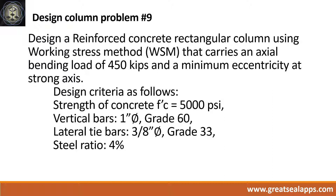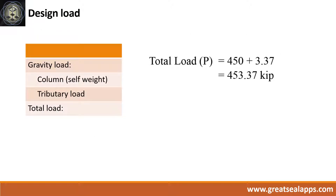Strength of concrete: 5,000 psi. Vertical bars: 1-inch diameter bar, grade 60. Lateral tie bars: 3/8-inch diameter bar, grade 33. Steel ratio: 4%. The column carries an axial load of 450 kips.